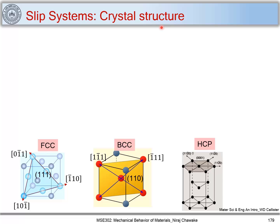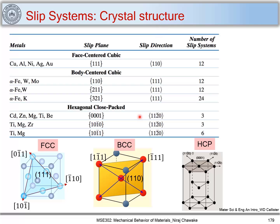Let's look at the slip systems in these crystal structures — let's re-brush. We have already seen slip systems in FCC, BCC, and HCP crystal structures. For metals such as copper, aluminum, nickel, silver, and gold, which have FCC structures, the slip plane is the {111} plane and the slip direction is the <110> direction. The number of slip systems is 12. You can see that the {111} plane contains three slip directions, and with four such slip planes, we get 12 slip systems.